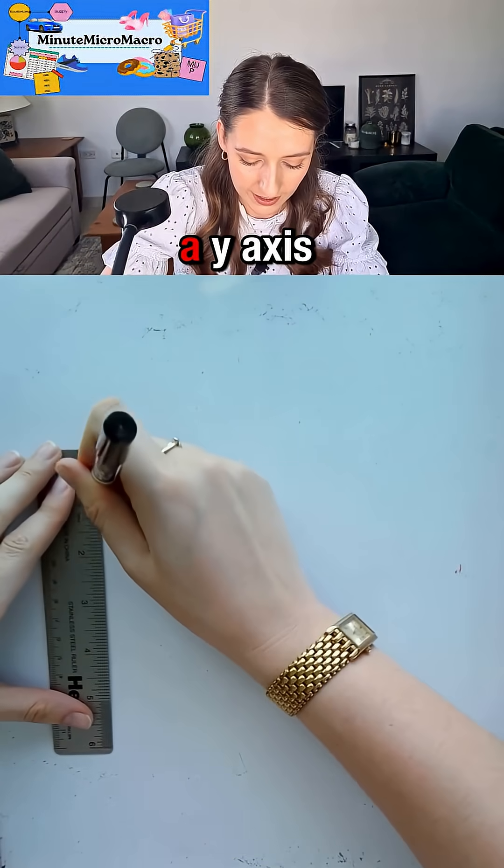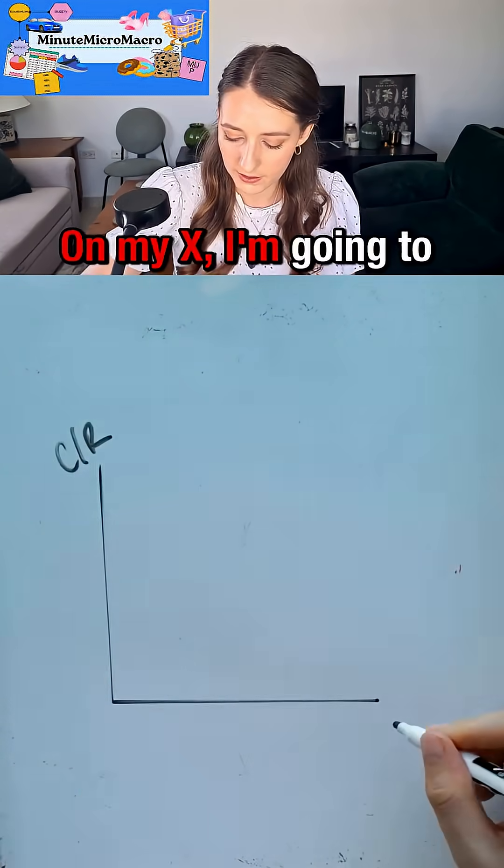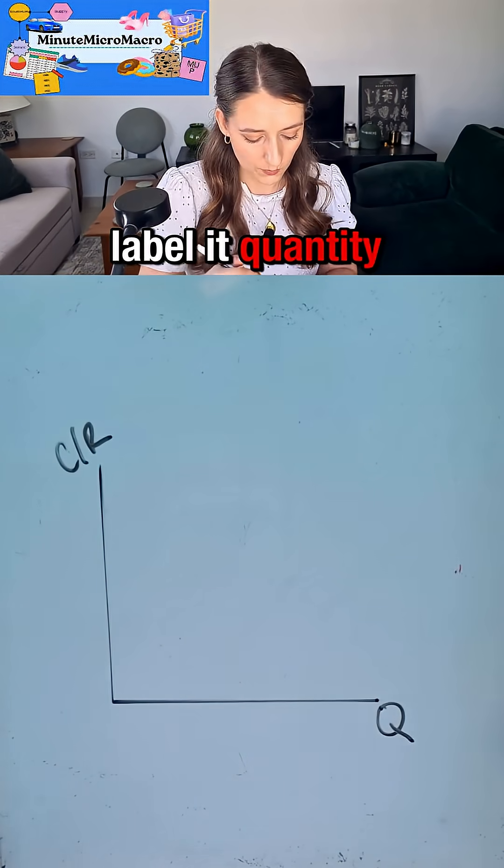As always, I'm going to start with a y-axis and an x-axis. On my y-axis I'm going to label it cost and revenue, and on my x-axis I'm going to label it quantity.